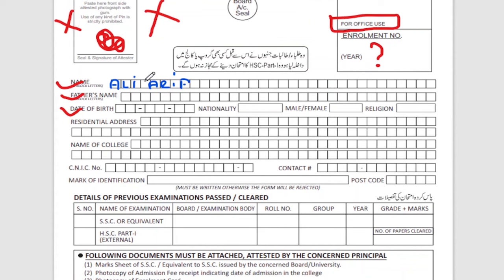Leave one box blank between the first name and the surname. You can only fill inside the boxes — never leave any box blank within a name, and never fill outside the boxes. Fill letters in capital letters only. Then you have to fill in the father's name the same way.